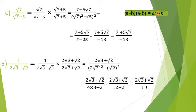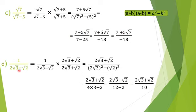Applying a squared minus b squared: radical 7 squared is 7, and 5 squared is 25, so we get 7 minus 25 which equals negative 18 — an integer, no radical. On top, I distribute radical 7: radical 7 times radical 7 is 7, plus radical 7 times 5 is 5 radical 7. So the numerator is 7 plus 5 radical 7 over negative 18.